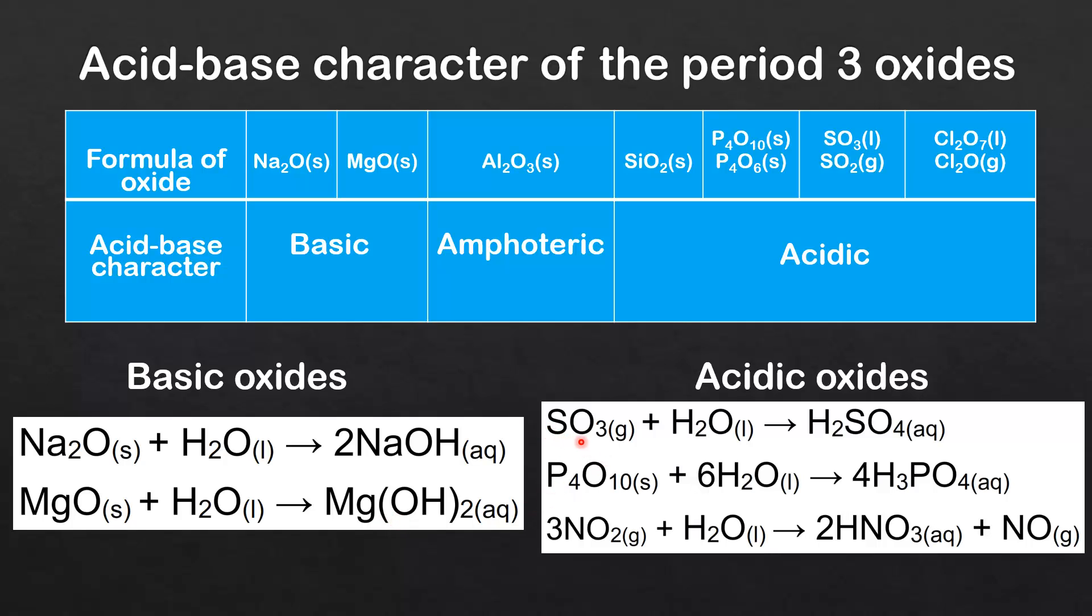The acidic oxides: we have sulfur trioxide reacting with water to form sulfuric acid, which is a strong acid. Next we have phosphorus pentoxide reacting with water to form phosphoric acid, which is a weak acid. And finally, we have nitrogen dioxide reacting with water to form nitric acid and nitrogen monoxide, and nitric acid is a strong acid.